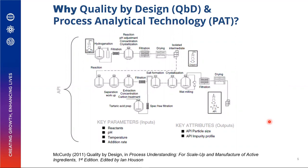Why QbD and PAT? Many of you are actually in the plant. Coming from an academic background working at A*STAR for over 16 years, if you refer to the chapter on quality by design, you see that in API manufacturing you start with hydrogenation, followed by filtration, pH adjustments, further filtration, drying, isolation, intermediates, crystallization, and so on. Key parameters include reactants, pH, temperature, and addition rate, targeting attributes like particle size and impurity profile.